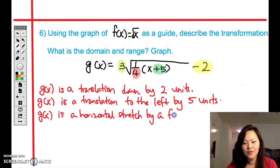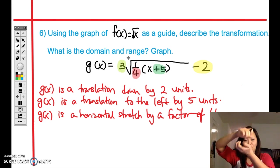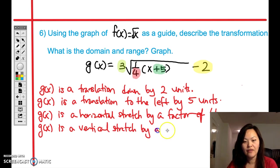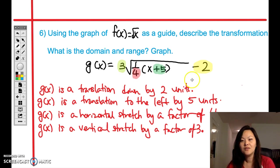And then finally we have to take a look at the 3, which is a vertical stretch. That means you're pulling the graph up and down, so the whole graph will get skinnier and taller. So g of x is a vertical stretch by a factor of 3. That's just the transformation.